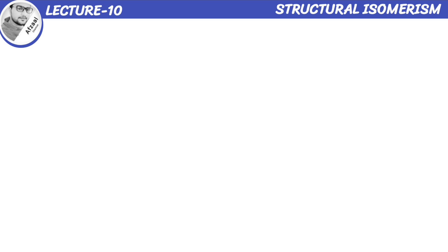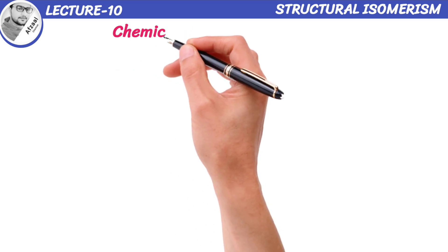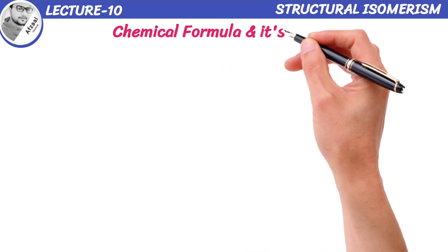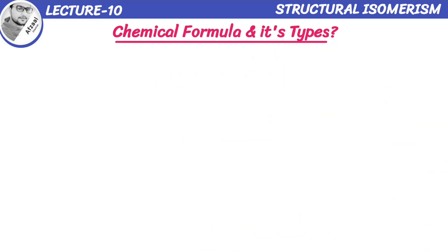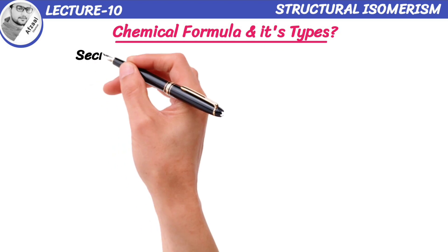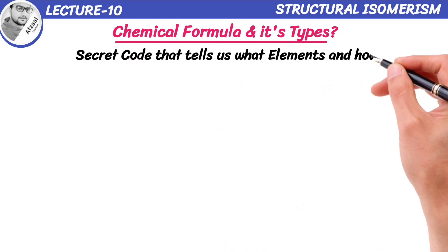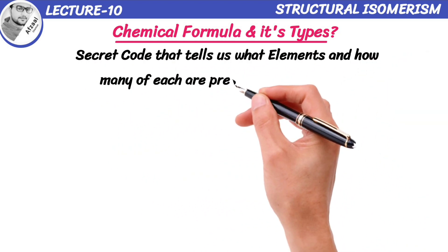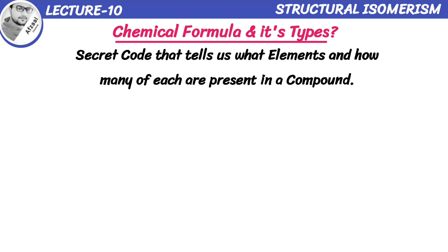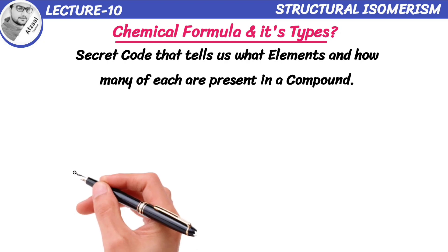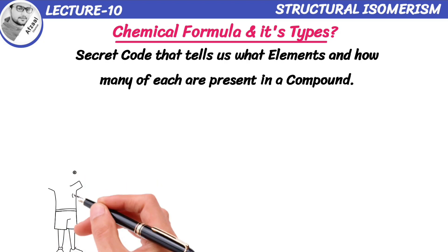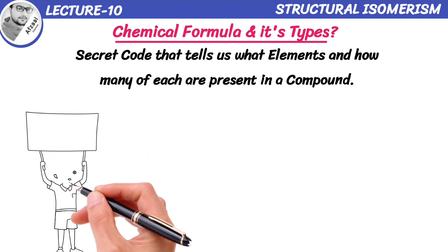First of all, let me teach you about chemical formula and its types. Think of it as a secret code that tells us what elements and how many of each are present in a compound. It's like a recipe for a compound.